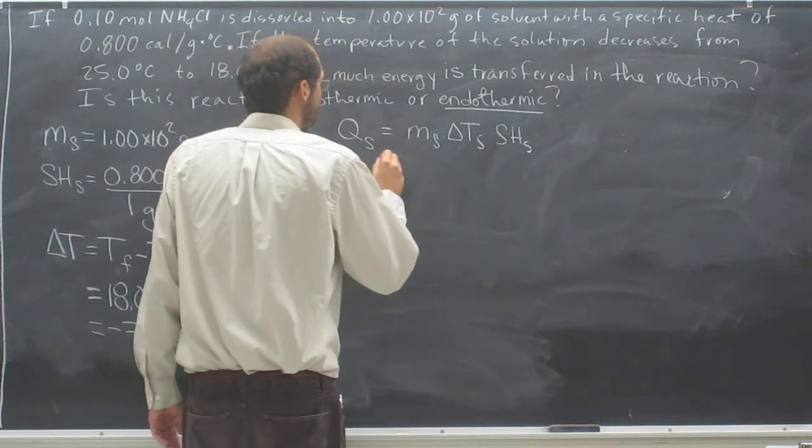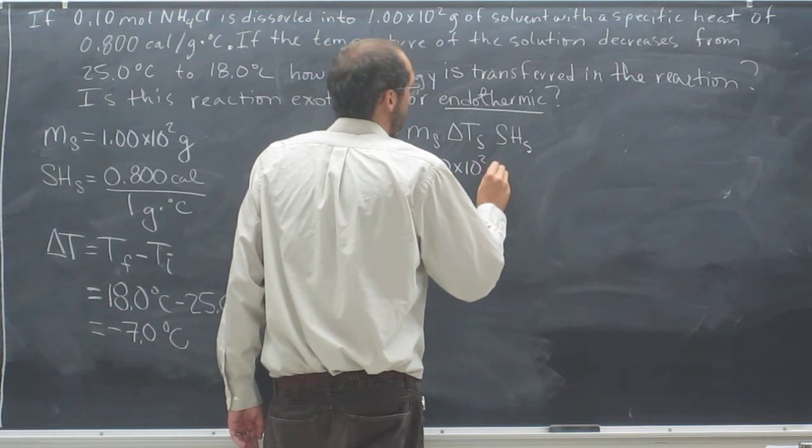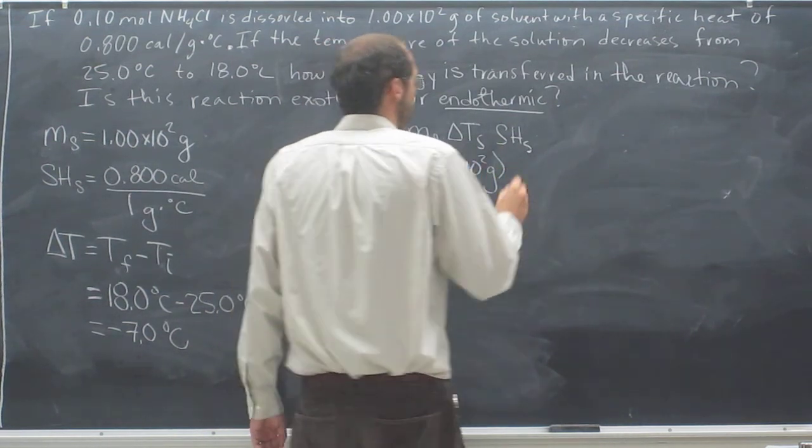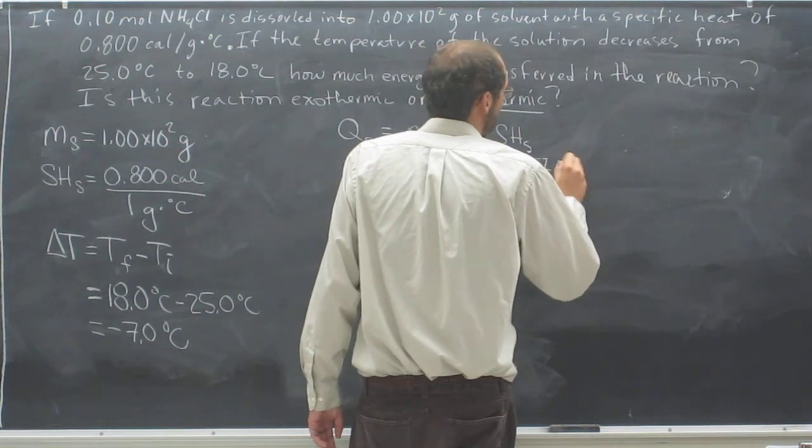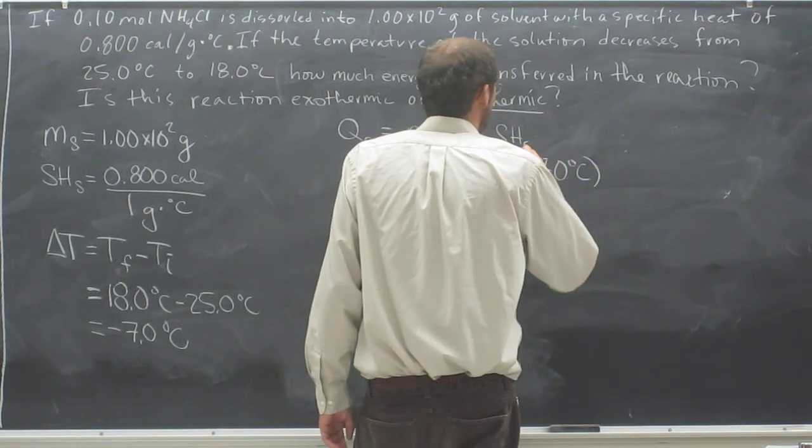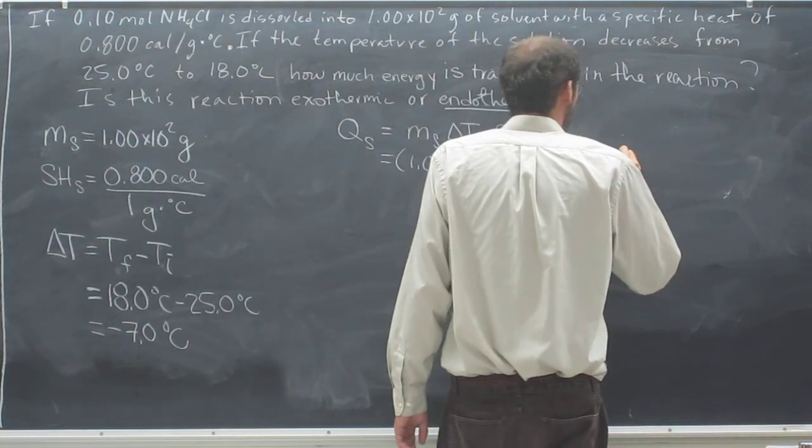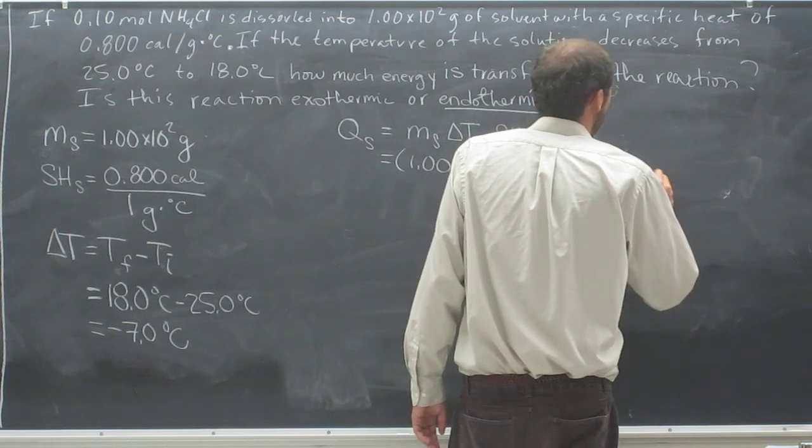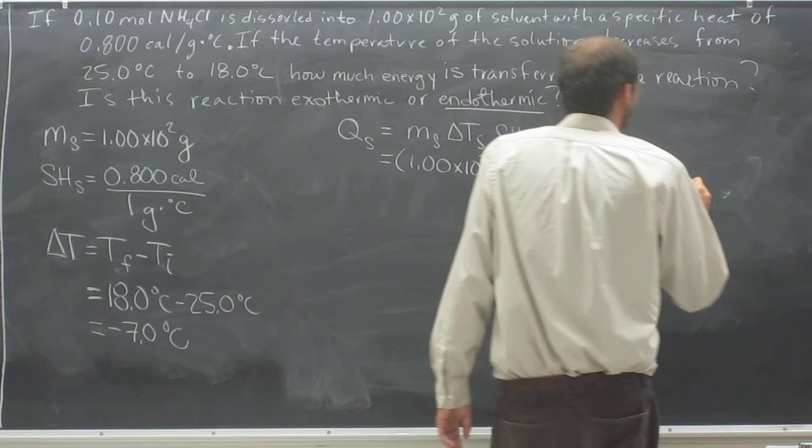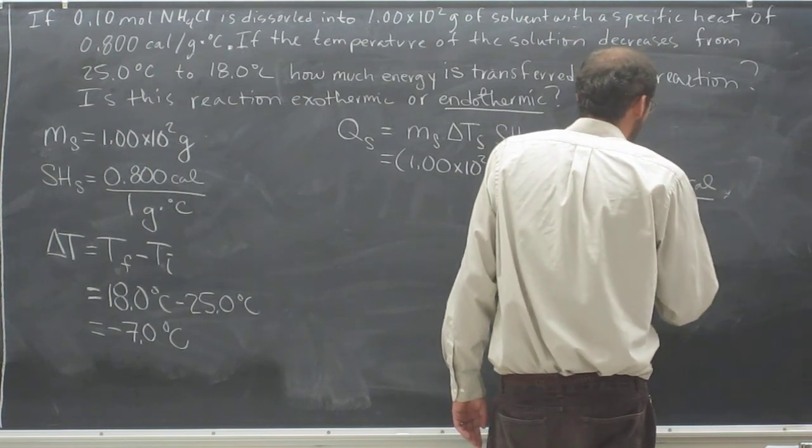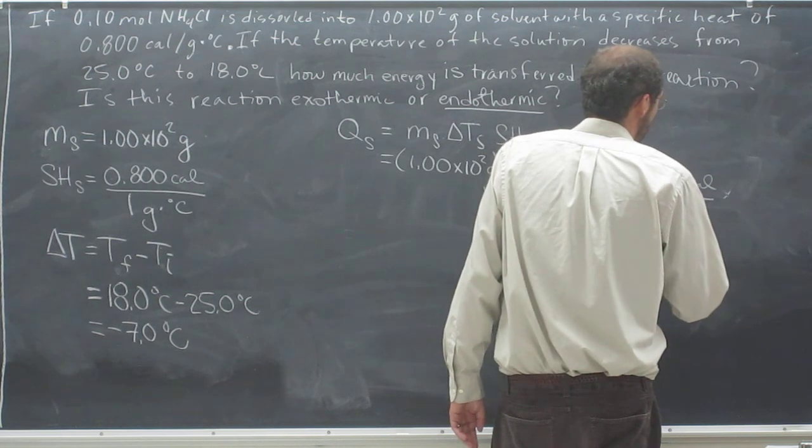So the mass of the solvent, 1.00 times 10 squared grams, the change in temperature of the solvent is negative 7.0 degrees Celsius, and the specific heat of the solvent is 0.800 calories per 1 gram times degrees Celsius.